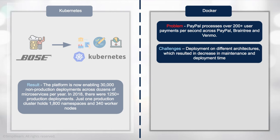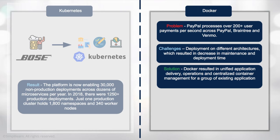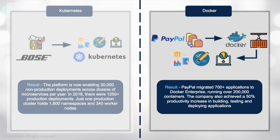Through the use of Docker, PayPal was able to unify application delivery and centralize the management of all containers with one existing group. The result was that PayPal migrated over 700 applications into Docker Enterprise, consisting of over 200,000 containers. This ultimately opened up a 50% increase in availability, adding time for building, testing, and deploying applications — just a huge win for PayPal.